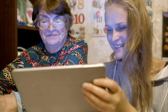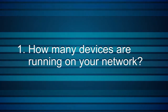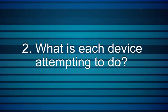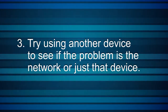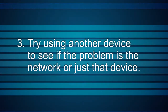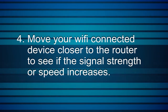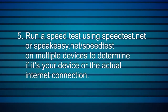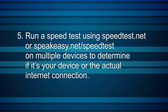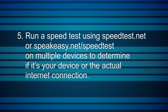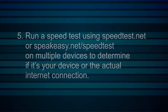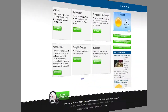To determine your actual internet speed, you will need to take all of these things into consideration. Keep in mind, when it comes to troubleshooting internet issues, every single household is different. If you are experiencing internet issues, go through the following checklist: 1. How many devices are running on your network? 2. What is each device attempting to do? 3. Try using another device to see if the problem is the network or just that device. 4. Move your Wi-Fi connected device closer to the router to see if the signal strength or speed increases. 5. Run a speed test using speedtest.net or speakeasy.net/speedtest on multiple devices to determine if it's your device or the actual internet connection. You can find a quick link to speedtest.net at the bottom of the SciTech website.